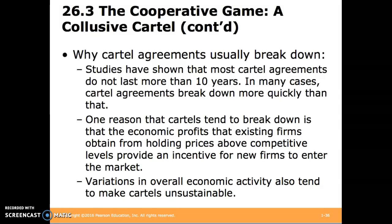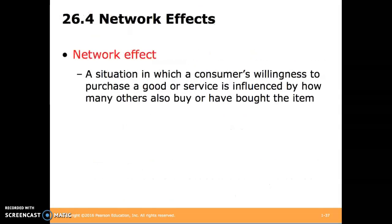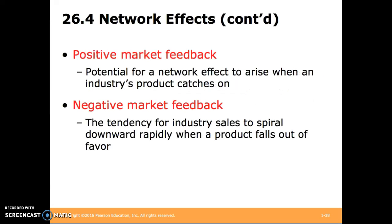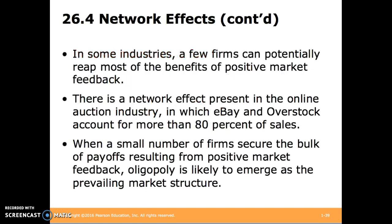Network effects describe a situation in which a consumer's willingness to purchase a good or service is influenced by how many others also buy or have bought the item. Consider social networks like Twitter, where it's more valuable when more people use the product. Positive market feedback is the potential for a network effect to arise when an industry's product catches on. Negative market feedback is the tendency for industry sales to spiral downward rapidly when a product falls out of favor. We can also see network effects in the online auction industry, where higher numbers of sellers lead to more options for buyers, and a larger number of buyers leads to the highest possible prices for sellers.